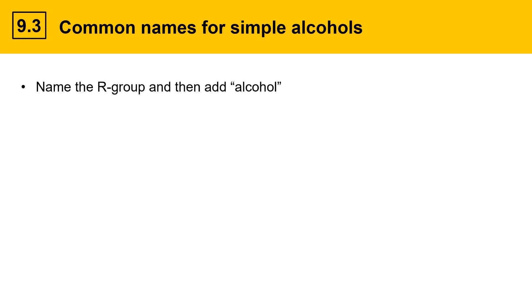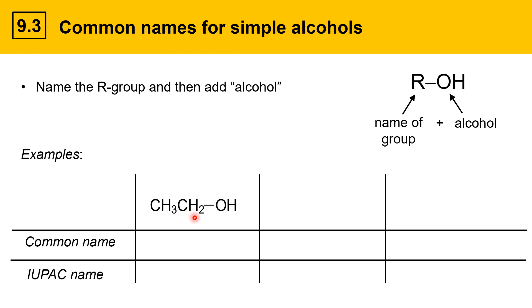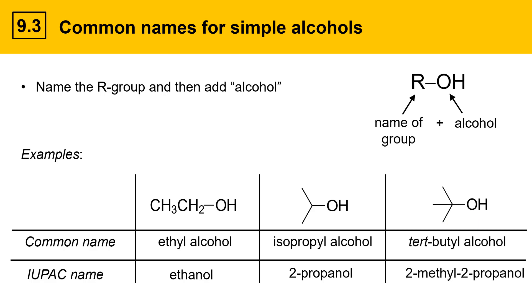In addition to systematic names, there's a common naming scheme often used for simple alcohols: name the R group and then simply add 'alcohol' to it. For example, an alcohol with an ethyl group is ethyl alcohol — its IUPAC name is ethanol. An alcohol with an isopropyl group is isopropyl alcohol — its IUPAC name is 2-propanol. A molecule with a tert-butyl group attached to OH is tert-butyl alcohol — its IUPAC name is 2-methyl-2-propanol. Both names are commonly used.